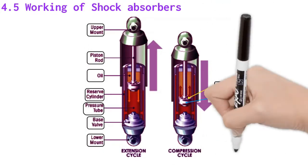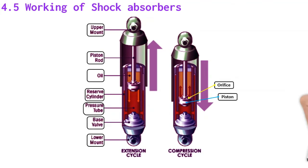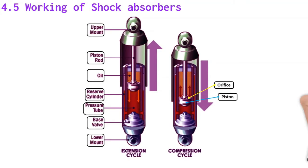Working of shock absorber. Shock absorbers work by taking the kinetic energy of your suspension and converting it into thermal energy, which is then dissipated into the atmosphere through heat exchange. Shock absorbers are basically oil pumps — a piston is attached to the end of a piston rod and works against the hydraulic fluid in the pressure tube. As the suspension travels up and down, hydraulic fluid is forced through orifices inside the piston. Because these orifices only allow a small amount of fluid through, the piston is slowed, which in turn slows down the spring and suspension movement. Shock absorbers automatically adjust to road conditions because the faster the suspension moves, the more resistance they provide.